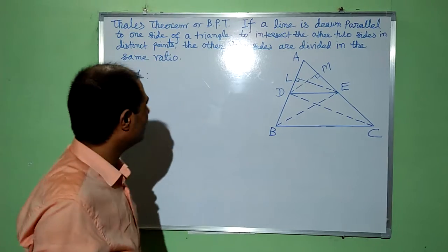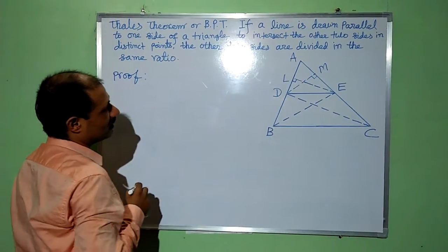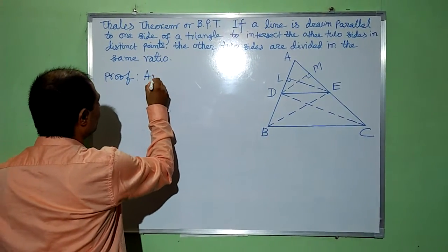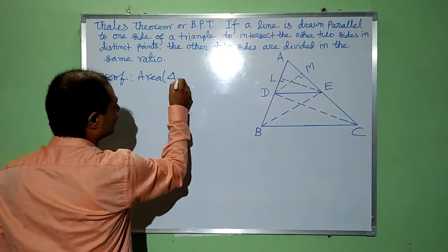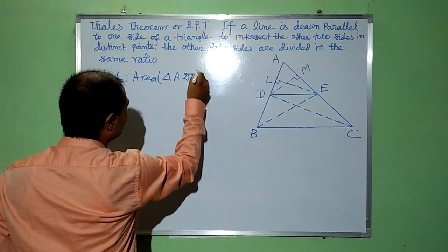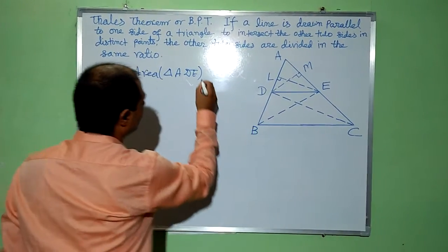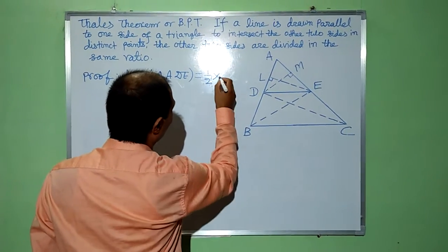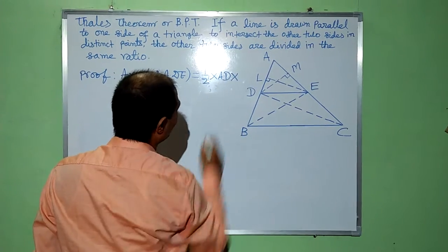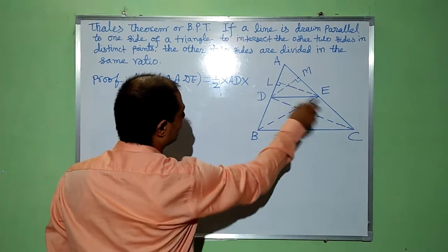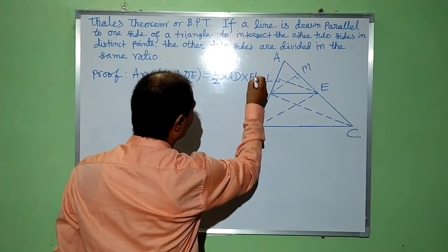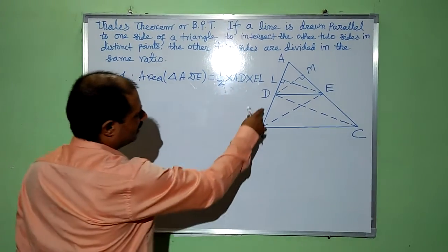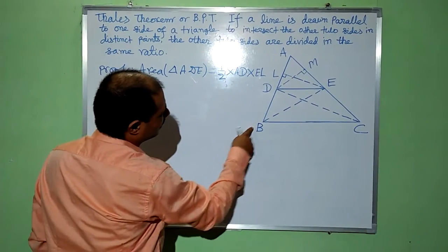Now, firstly, I am going to find area of triangle ADE. Area of triangle ADE equals half into base AD into height EL.